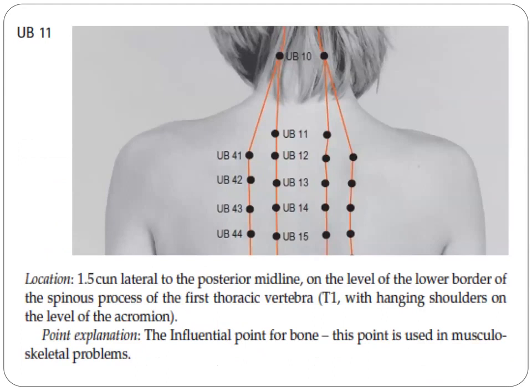Next, we have UV11. This is located at 1.5 cun lateral to the posterior midline, on the level of the lower border of the spinous process of the first thoracic vertebra, T1, with hanging shoulders on the level of the acromion. Point explanation: this is the influential point for bone and is used in musculoskeletal problems.